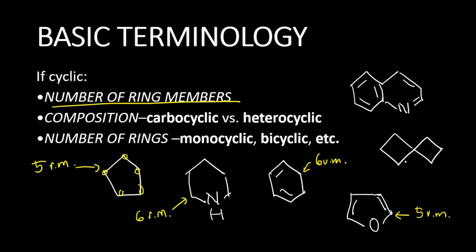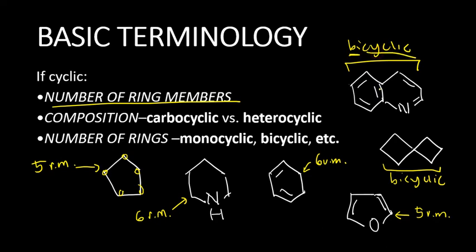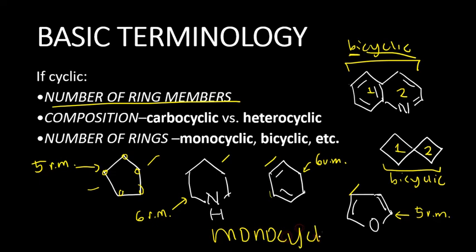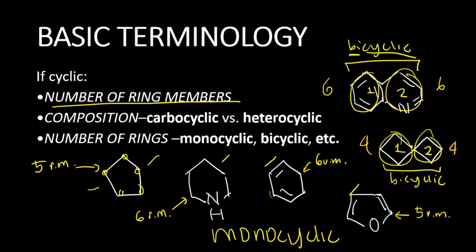Now, for the first time, we encounter what you call a bicyclic compound. This one is also a bicyclic compound. When you say bicyclic, bi means two — so that means two rings. All the structures we have encountered so far at the bottom are only one ring system, so we can call those monocyclic. In a bicyclic system, you may describe the rings individually: this one has six ring members, this one has six, this one has four, this one has four.